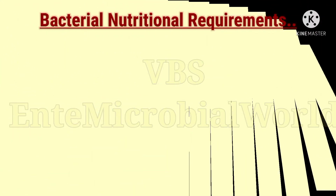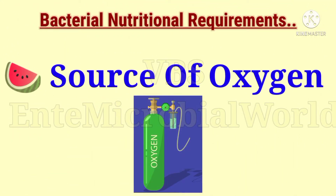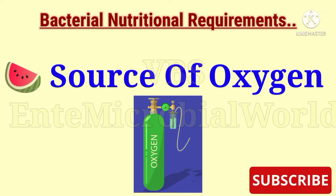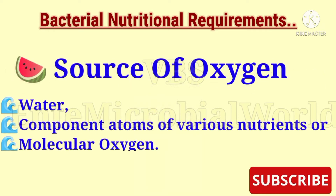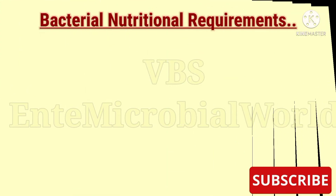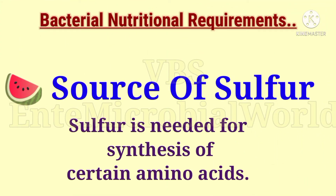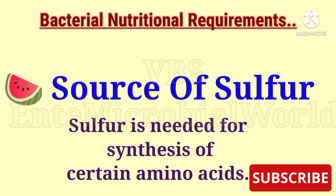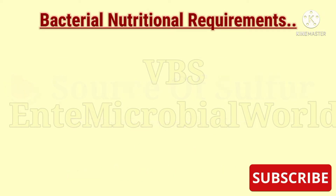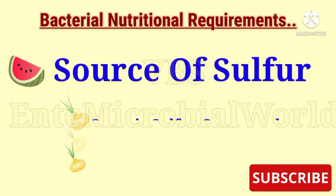Source of oxygen: oxygen is provided in various forms such as water, component atoms of various nutrients, or molecular oxygen. Source of sulfur: sulfur is needed for the synthesis of certain amino acids.